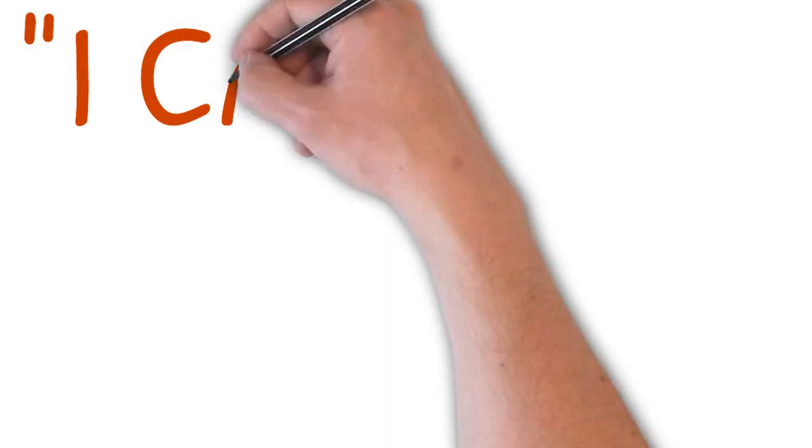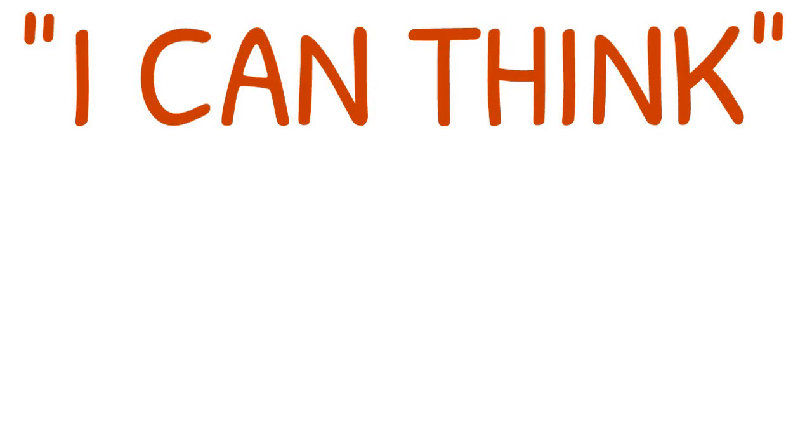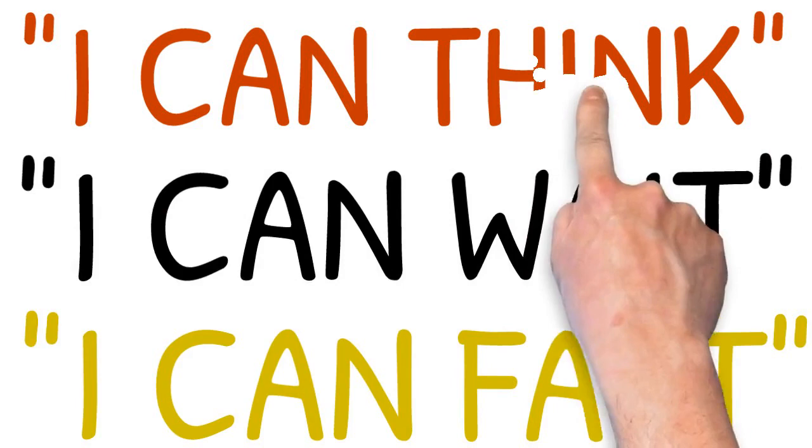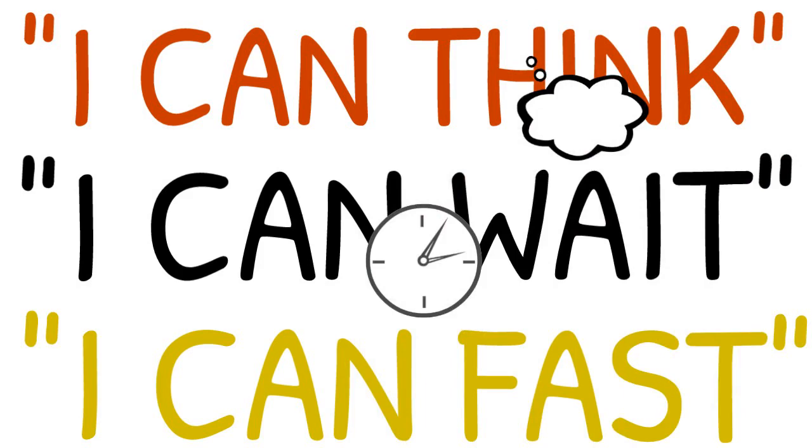And the author breaks down these three. The first one, I can think, having good rules for decision making and having good questions you can ask yourself and others. The second, I can wait, being able to plan long term and not misallocate your resources in the short term. And the third tool, I can fast, being able to withstand difficulties and disaster. Train yourself to be uncommonly resilient and have a high tolerance for pain.